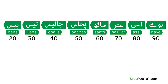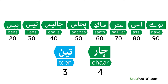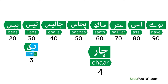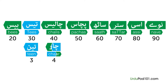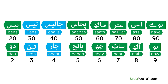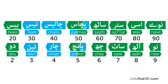While you have to memorize many of the numbers, there is a trick that will make memorizing them easy. Notice that 30 is tees and 40 is chaalees. The sound 'ti' of teen (3) is used in tees (30), and the sound 'cha' in chaar (4) is used in chaalees (40). Similarly, 5 in Urdu is paanch while 50 is pachaas — the common sound is 'paa.' Unfortunately, this does not apply to all numbers. For example, 60 in Urdu is saat while 6 is chhe, so there is no common sound.